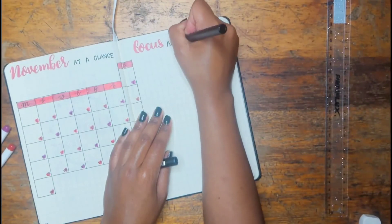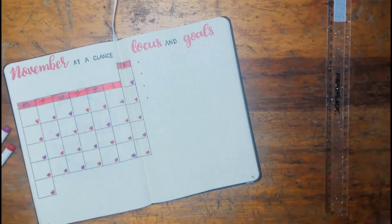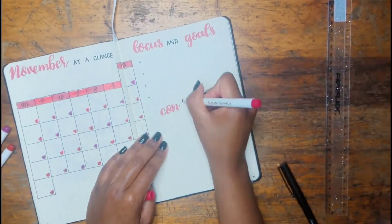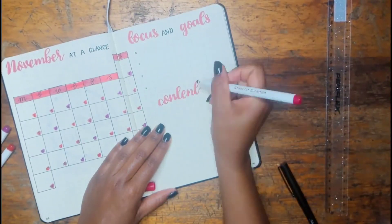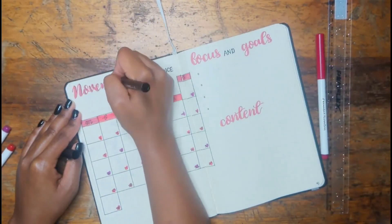Here on the right side of the spread I did a little section for my goals and things I want to focus on this month, and also a little space for writing what content I'm going to be publishing this month on my blog and on YouTube.